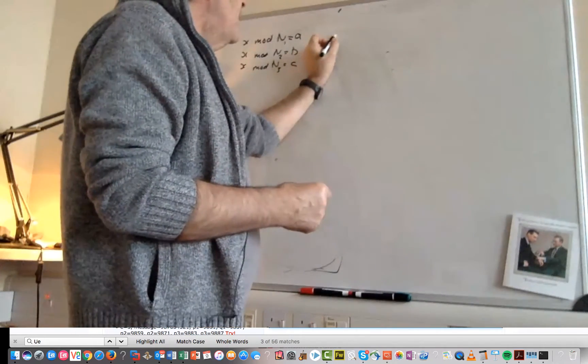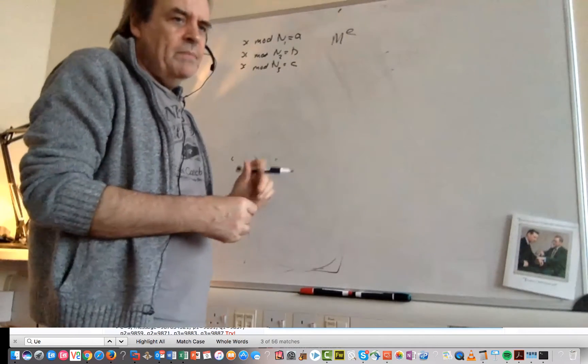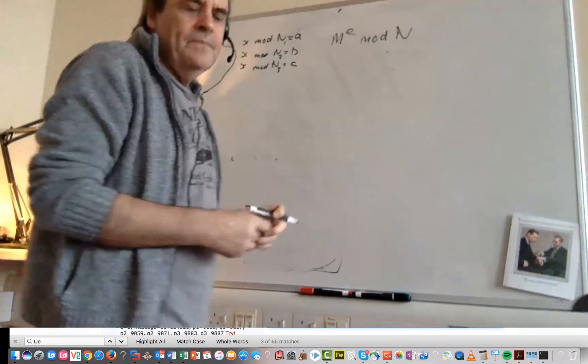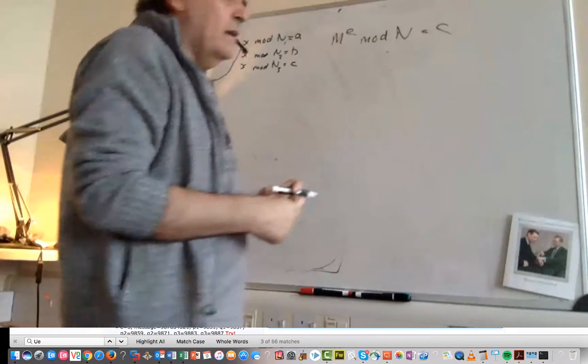So the form that we have when we're encrypting with RSA is M to the power of E mod N. So that will then equal our cipher.